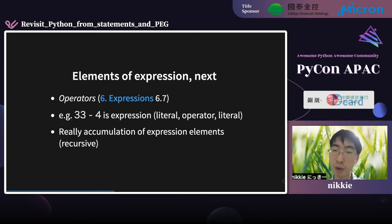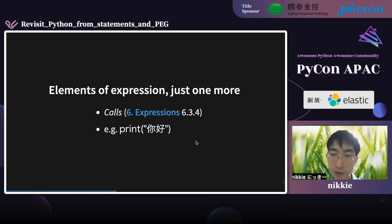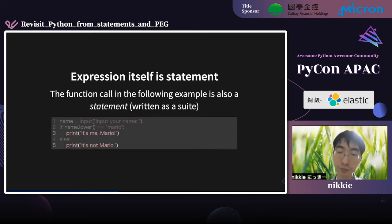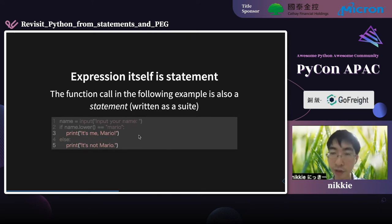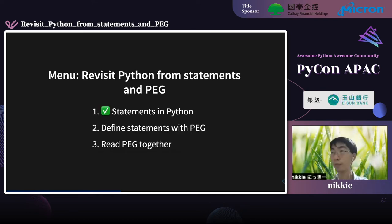Here are some examples: a literal is an expression — an integer is a literal, so it is an expression. Another element of an expression is the operator — '33 minus 4' is an expression using operators. A function call is also an element of an expression. Here is an expression using a string literal to call the print function. Note that the expression itself is a statement, so lines 3 and 5 are expressions because they are function calls, and the expression itself is a statement — each line is a statement and it becomes a suite. Part 1 finished.